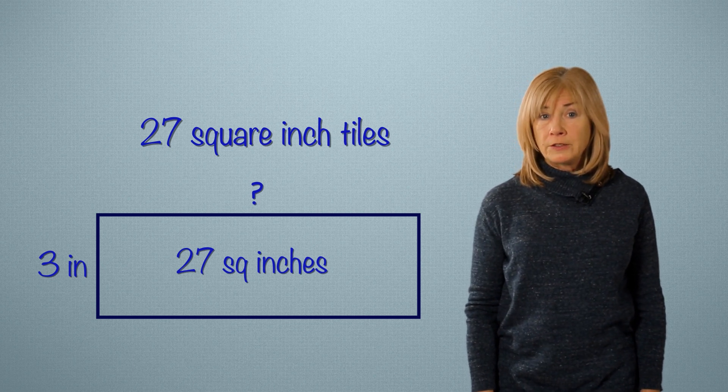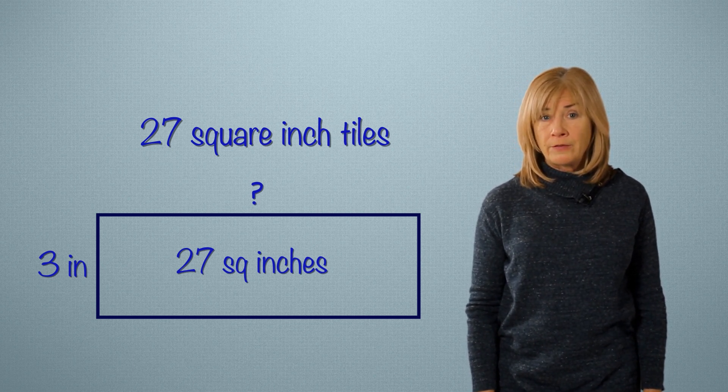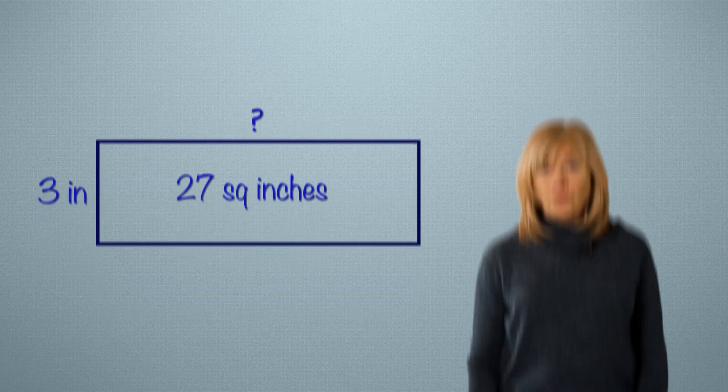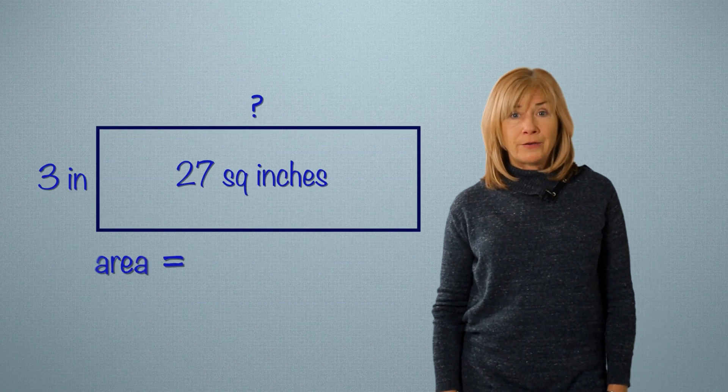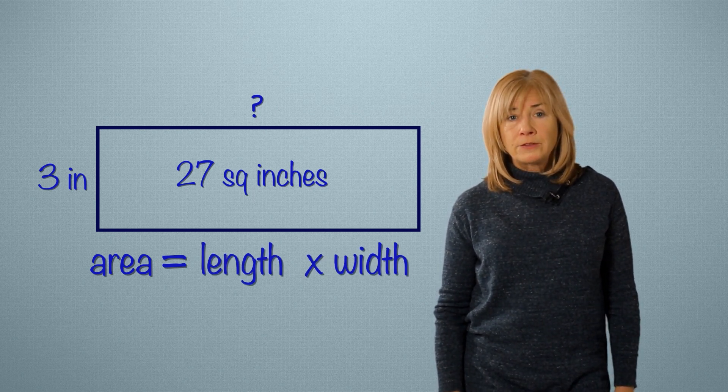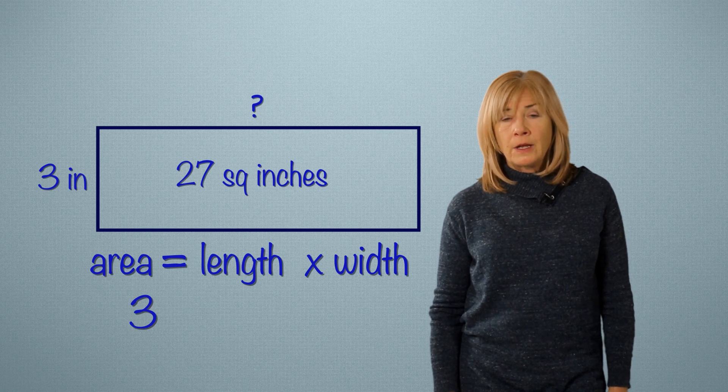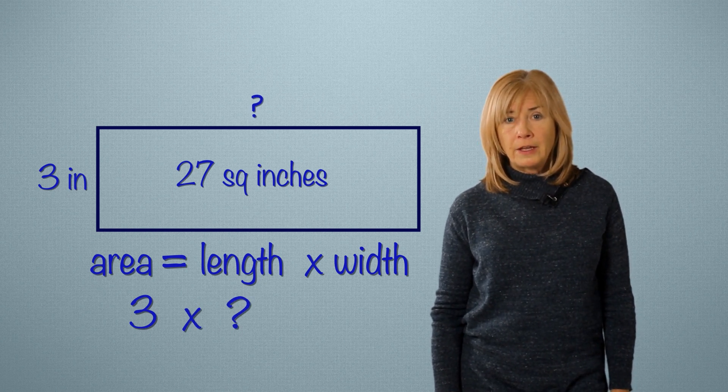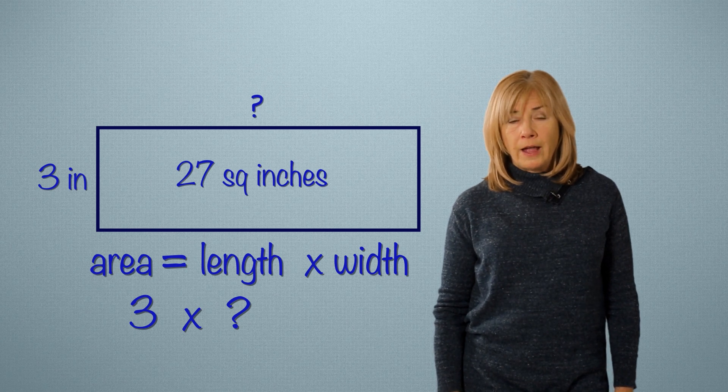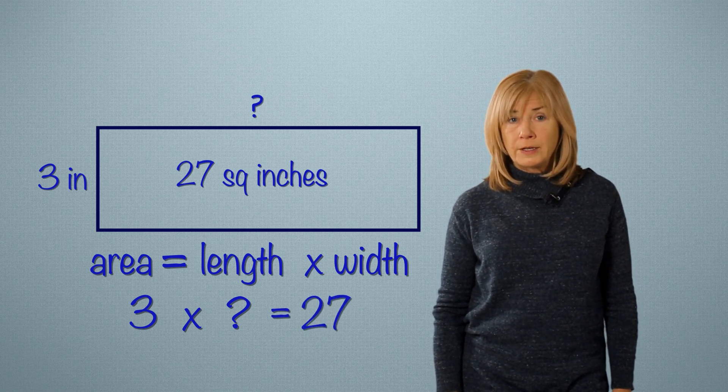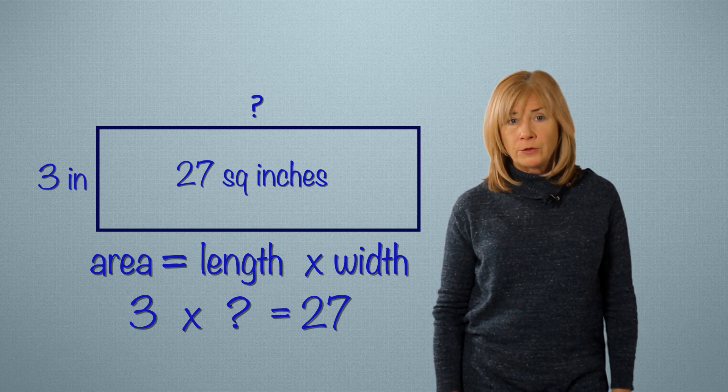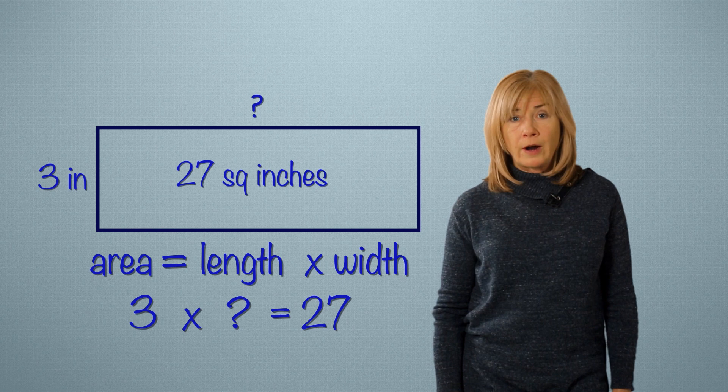Which multiplication sentence shows how we can solve this question? We know that to find area, we multiply the length and width together. So, that's 3 inches times this length here, which we'll mark with a question mark. And that equals 27 square inches. Now, what is our answer? What is the value of the question mark?